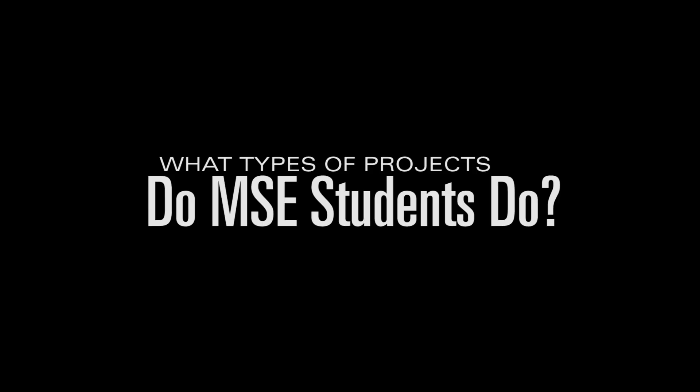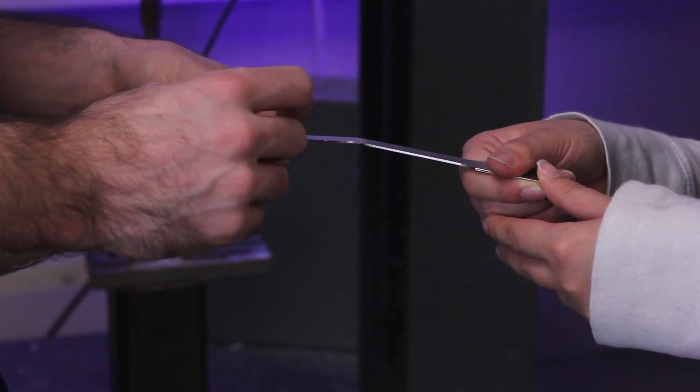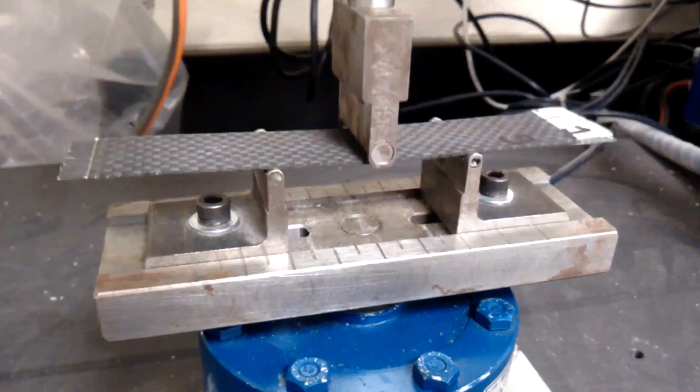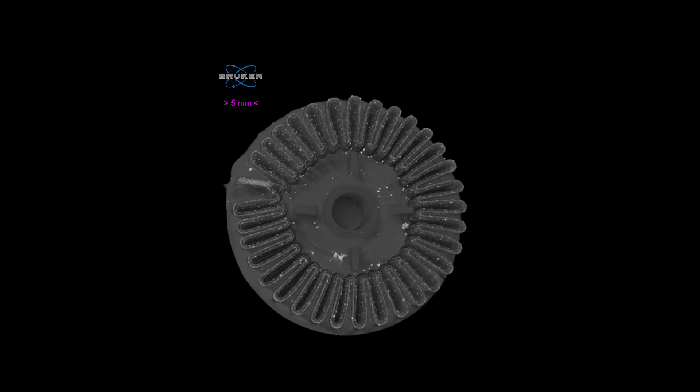What types of projects do MSC students do? Every year, the scope of the projects becomes more diverse. The versatile nature of MSC allows students to work with a multitude of materials, ranging from carbon fiber composites and additive manufactured parts to cable jackets and adhesives.